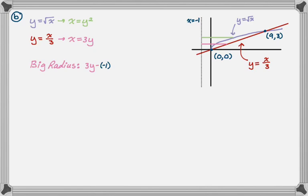So big radius is going to be that. And then my smaller radius is going to be, again, right takeaway left, except in this case, the right-hand curve is y squared. So it's going to be y squared minus negative 1, and then that's going to be y squared plus 1.